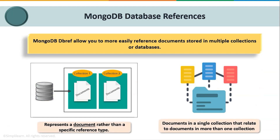MongoDB database references allow you to more easily reference documents stored in multiple collections or databases. Relationships between documents can be represented using DBRefs, which offer a standard format. If your database needs to communicate with a variety of frameworks and tools, the DBRef format offers common links for representing data between documents. In cases where a document contains references from different collections, you have to use MongoDB DBRefs, which represent a document rather than a specific reference type.